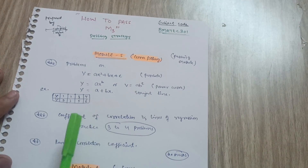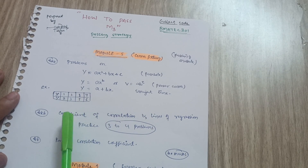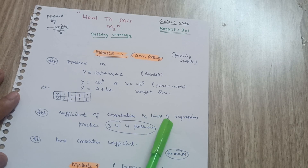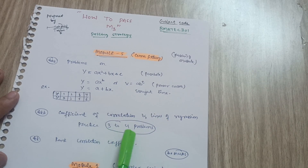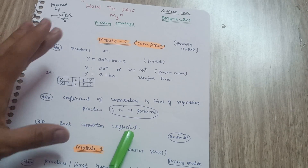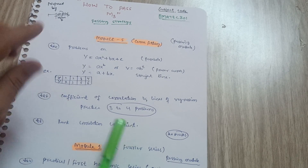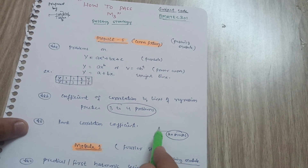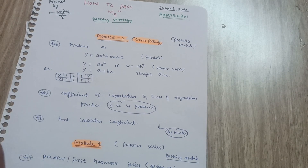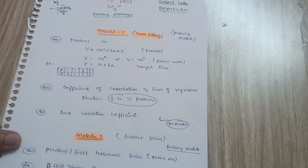Next is the coefficient of correlation and lines of regression. A data table will be given and you have to calculate the coefficient of correlation and lines of regression. Practice three to four problems from this concept. These are the only three concepts you need to cover in Module 5. If you cover just three questions from each concept, you will easily get 20 marks from this module — which is a key part of the passing strategy. Don't leave any question from Module 5, as the rest of the modules are tougher.